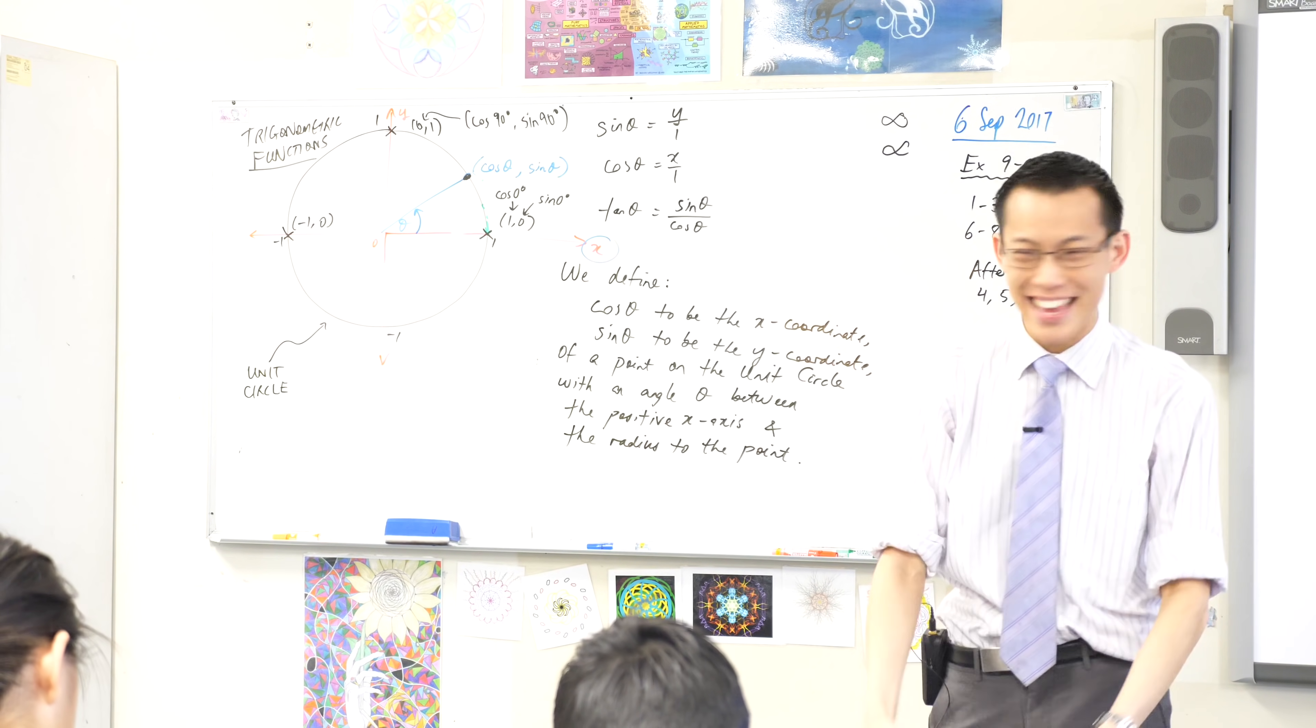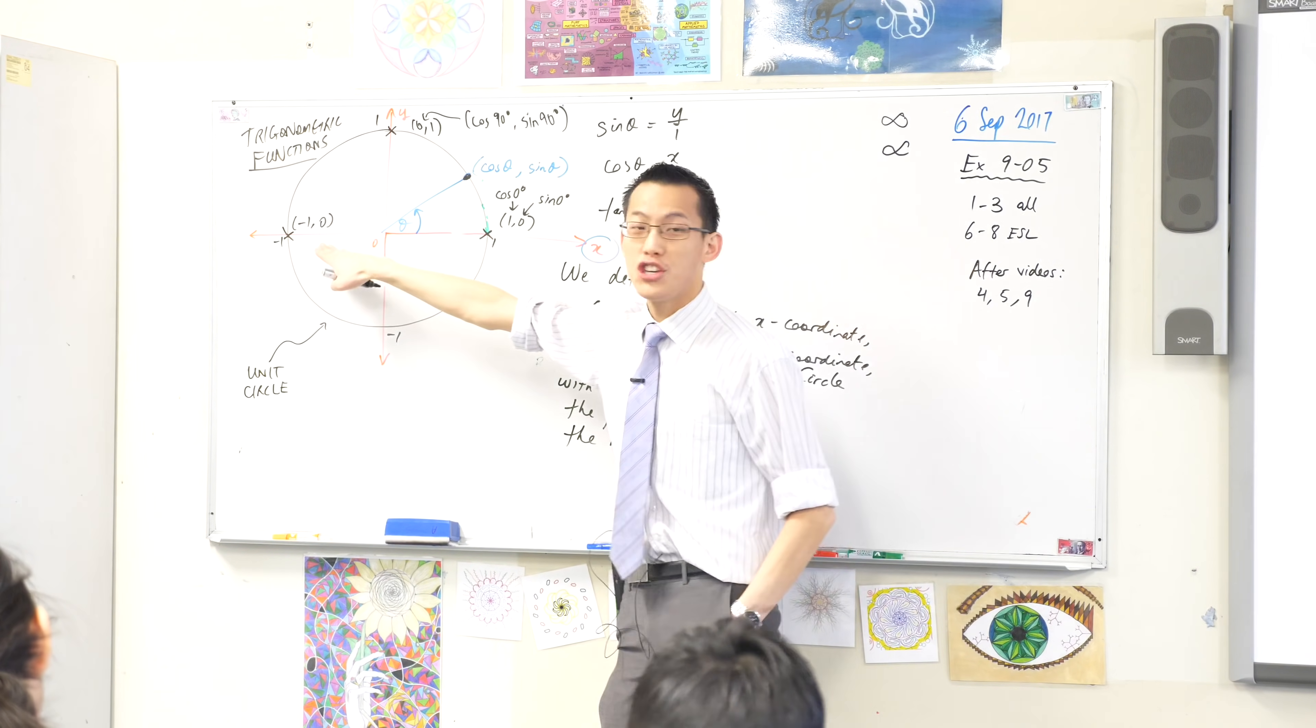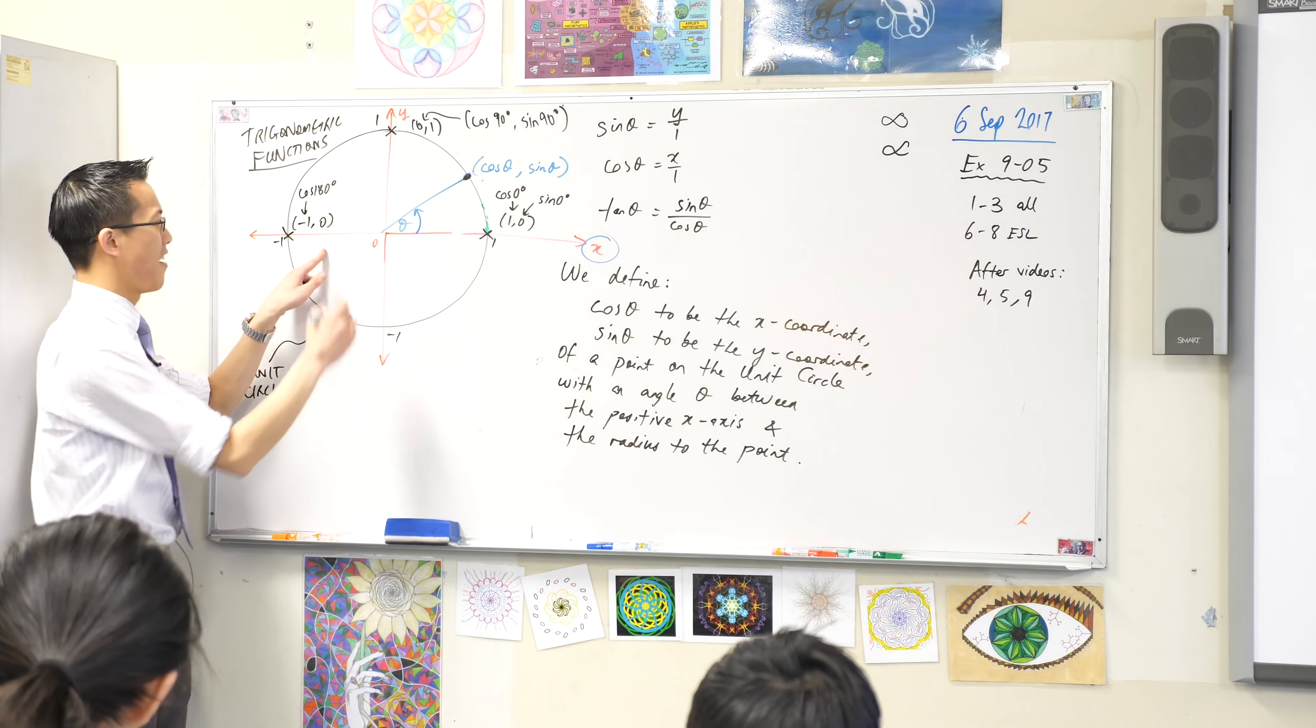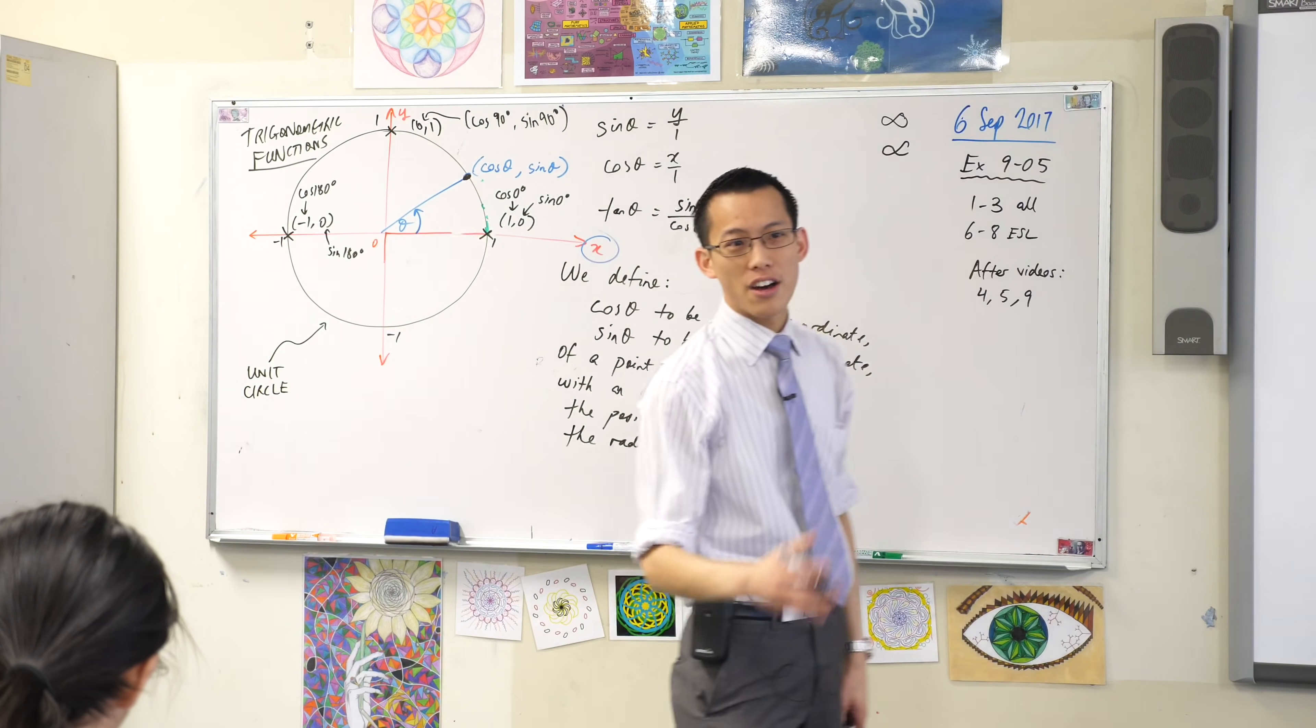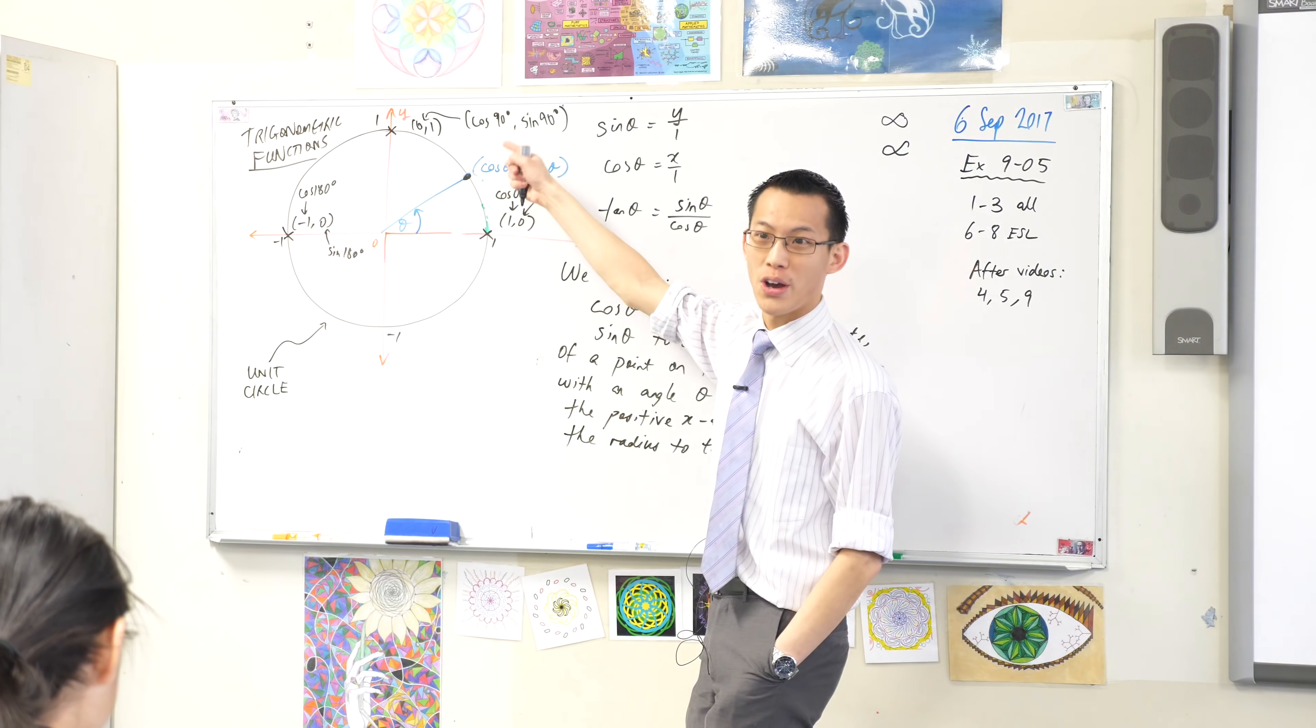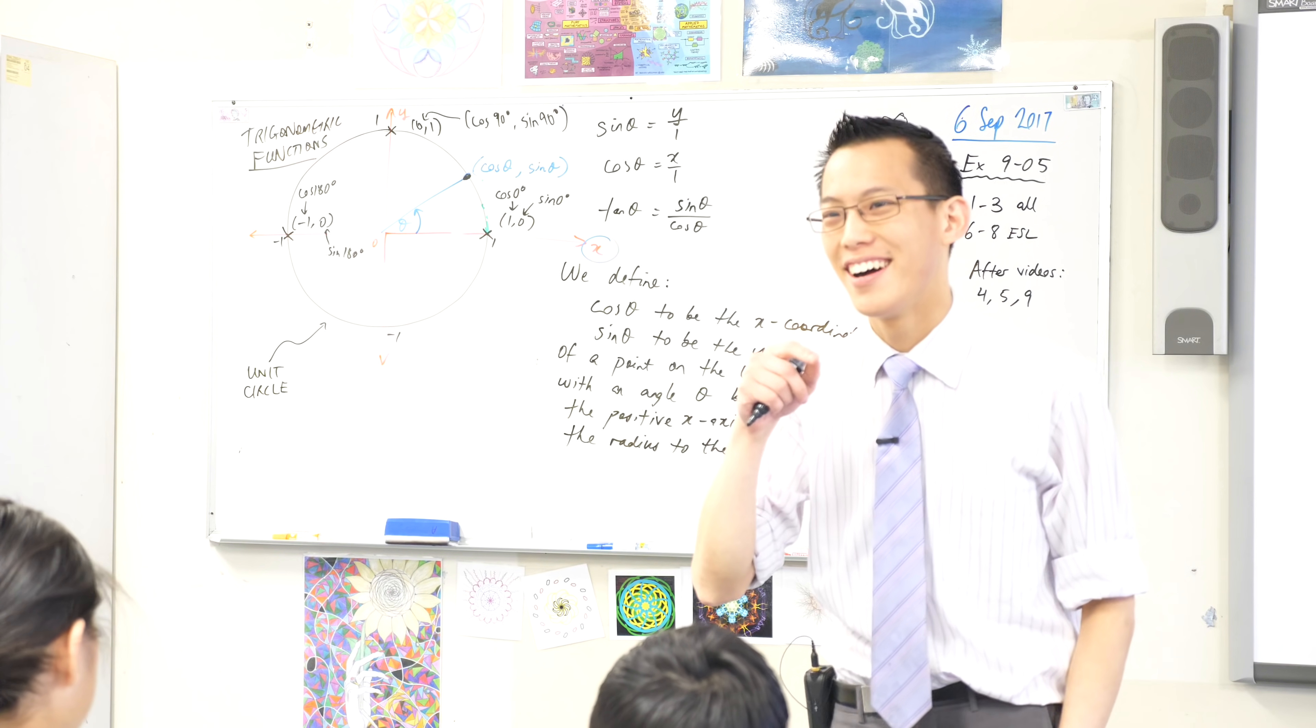Now 180 degrees makes even less sense than any of these things up here. At least you can fit 90 in a triangle. 180 can't ever be an angle in a triangle, right? But the unit circle tells us that cos 180 degrees is negative 1 and sin of 180 degrees is 0. Now you see how this is not ratios anymore. How can the ratio be a negative number? You can't have negative lengths. Well, on the unit circle, you can. The unit circle is like, watch out, we've got a bad ass over here. It's the unit circle.